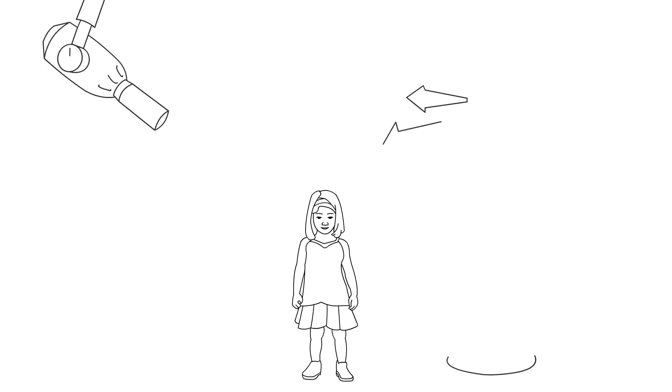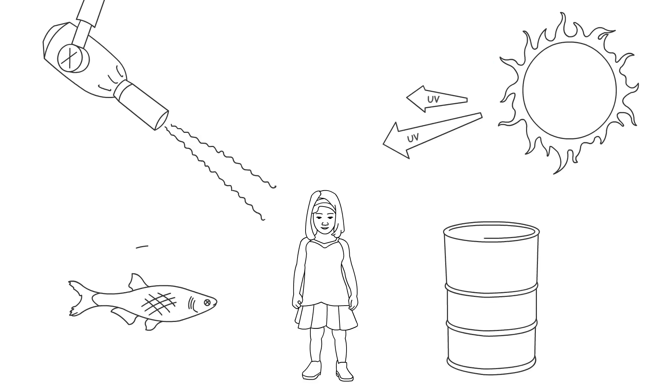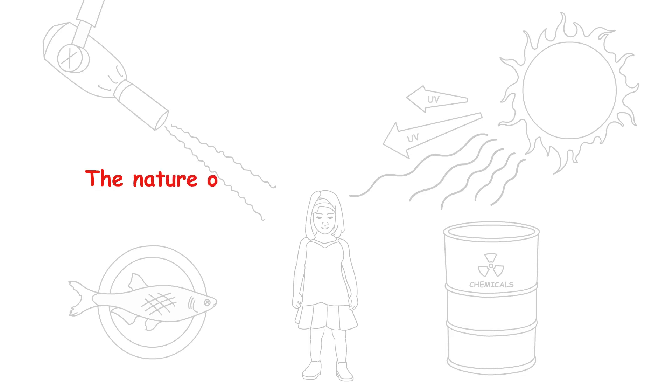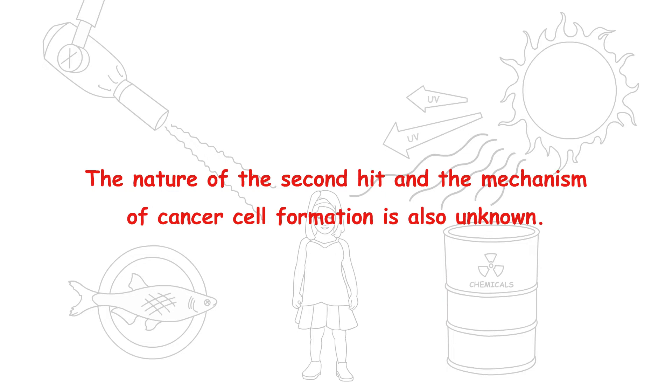Then in some children, there is a second hit that triggers the cancer. The nature of this second hit and the mechanism of cancer cell formation is also unknown. So, is there another theory?